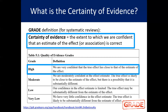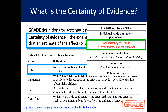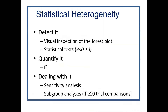Going back to our GRADE slide, we started at HIGH and now, as a result of substantial and significant heterogeneity, we would judge that there is inconsistency of the results and thus downgrade our certainty of evidence from high to moderate. Recall that there are ways to explore explanations for heterogeneity, including performing sensitivity analyses or subgroup analyses. If you find that you can explain heterogeneity, there may be reason to judge that we do not need to downgrade for inconsistency of results.